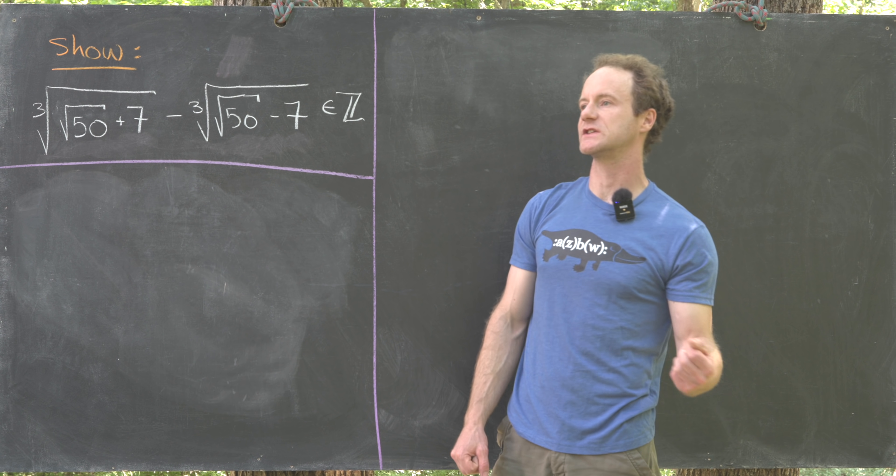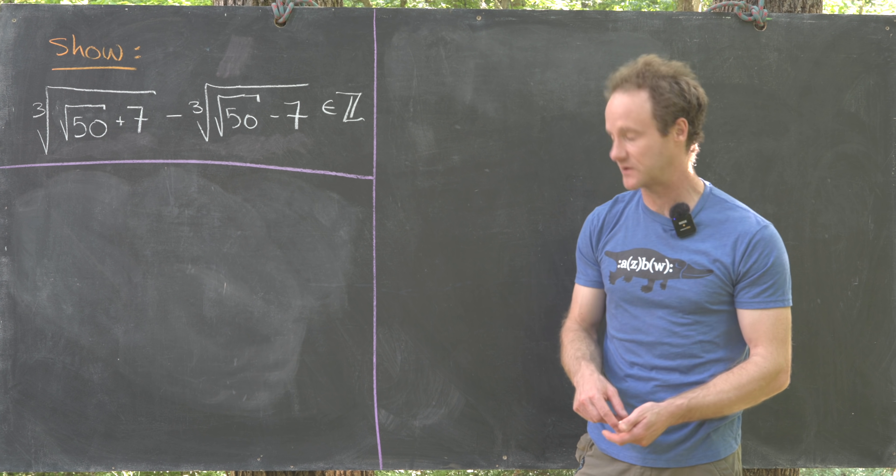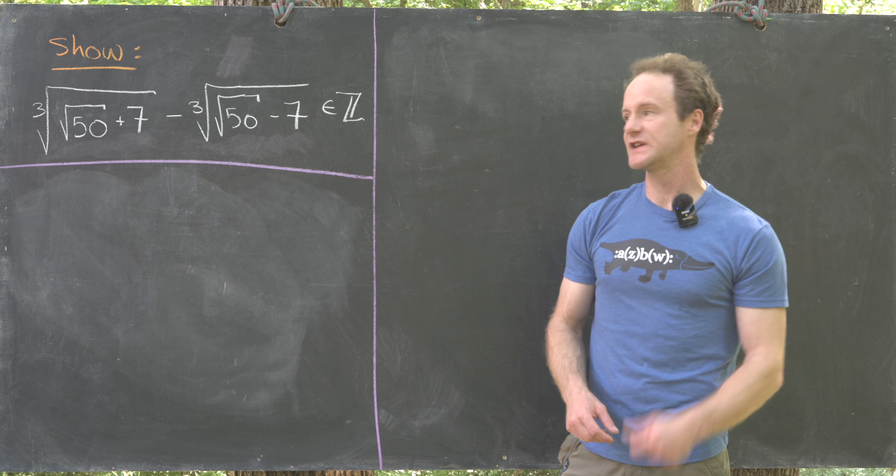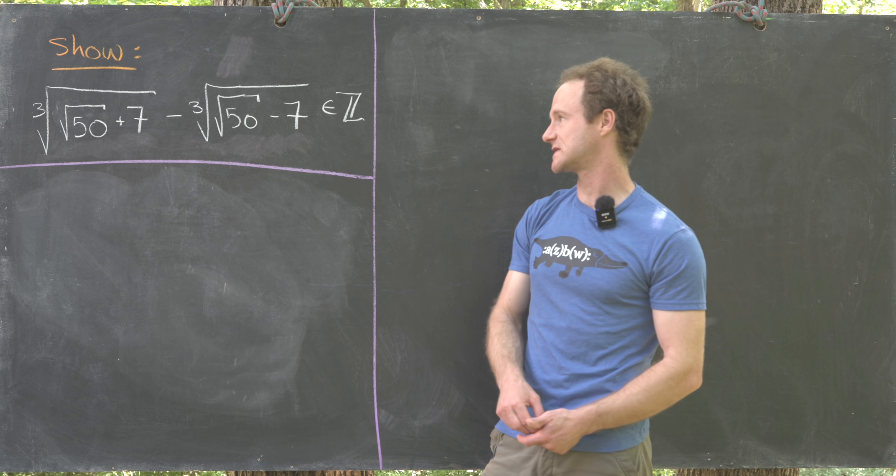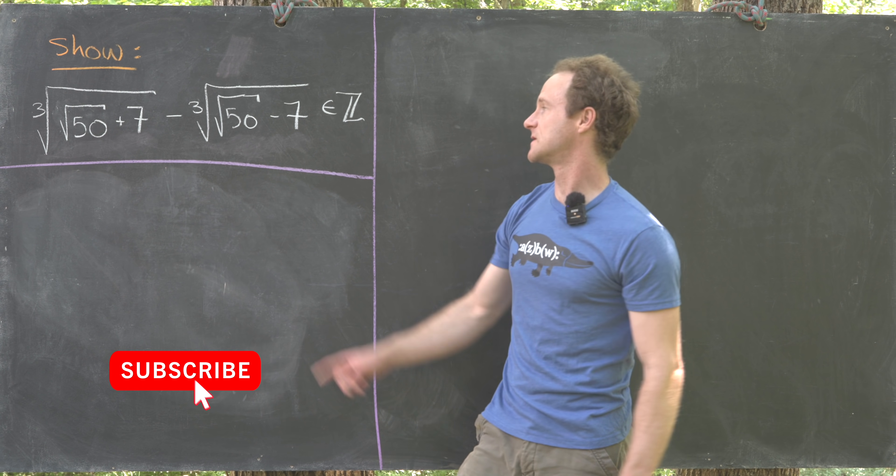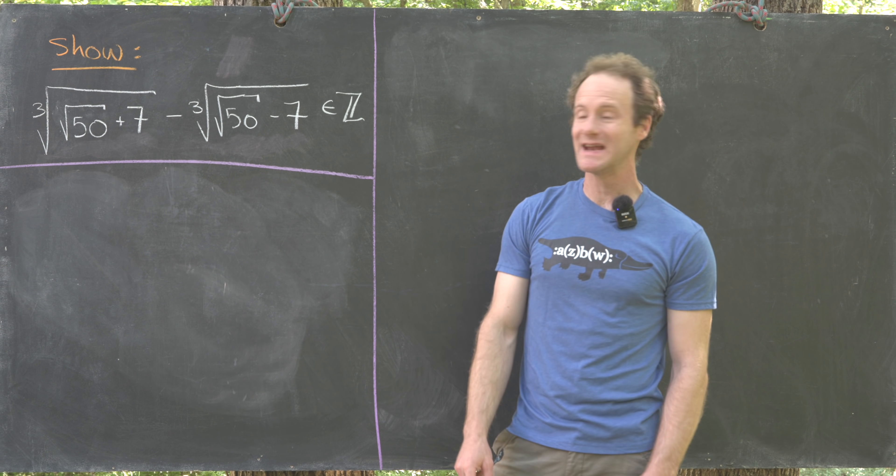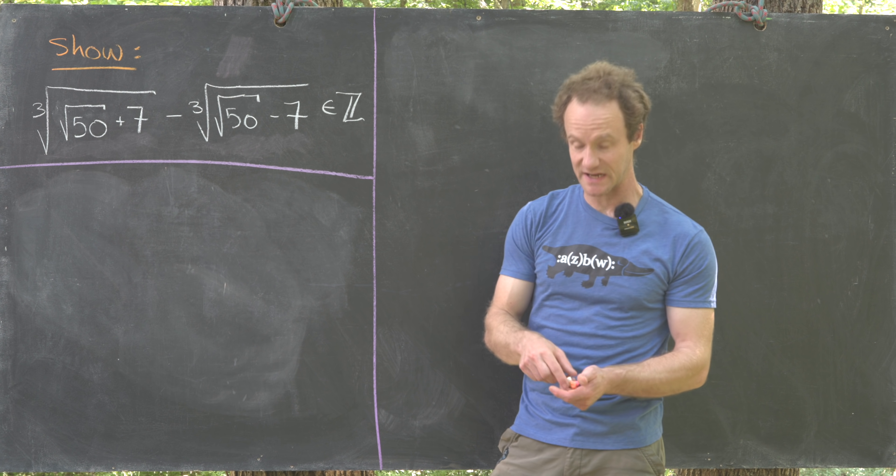I've got a nice little number puzzle today involving square roots nested inside of cube roots. In particular, we want to show that the cube root of the square root of 50 plus 7 minus the cube root of the square root of 50 minus 7 is in fact an integer.